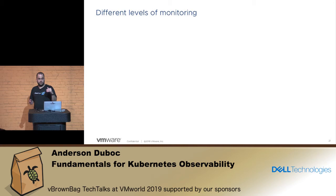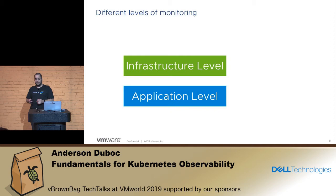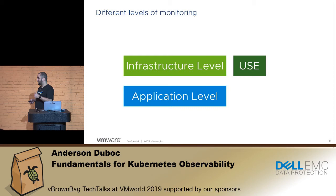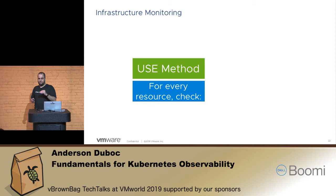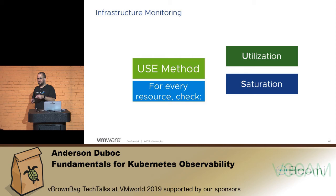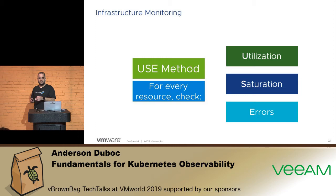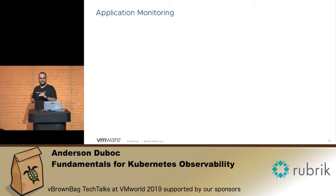There are different levels of monitoring and different approaches to that — an infrastructure level and an application level. I use the USE method to do infrastructure-level monitoring and RED to do application-level monitoring. The USE method is very easy: for every resource that you have, check utilization, saturation, and errors. That's it — when doing infrastructure monitoring, use the USE method.